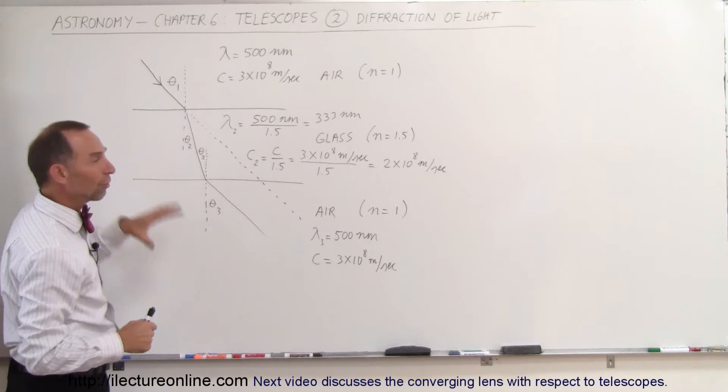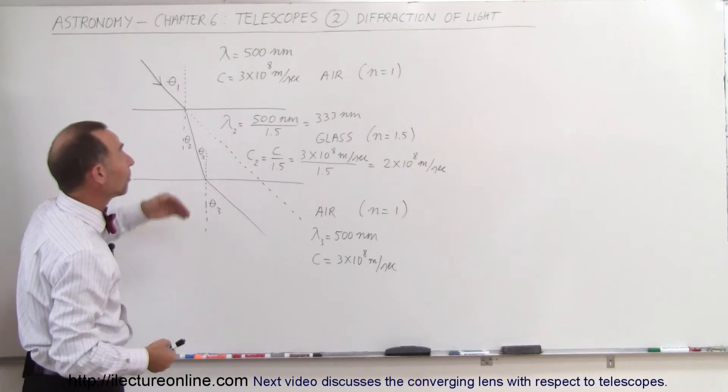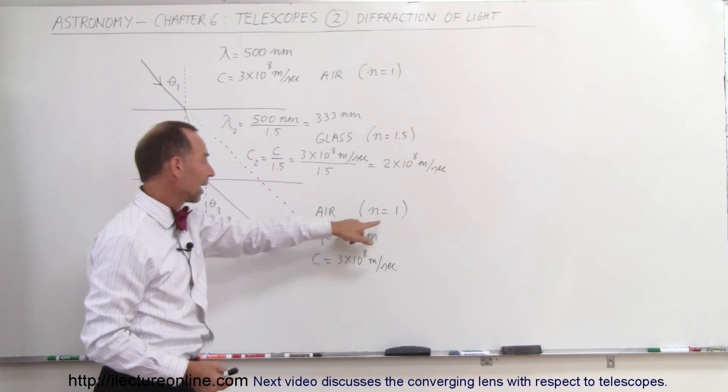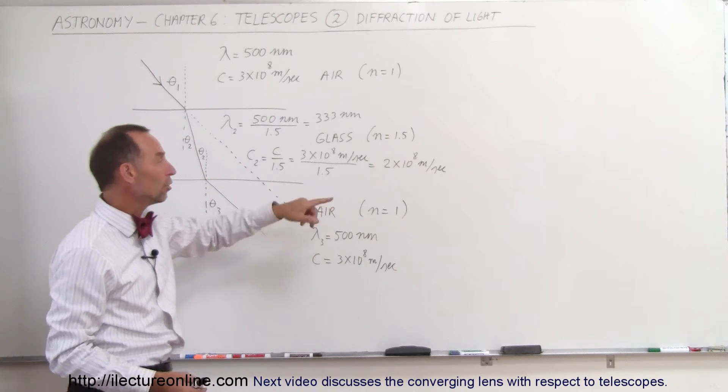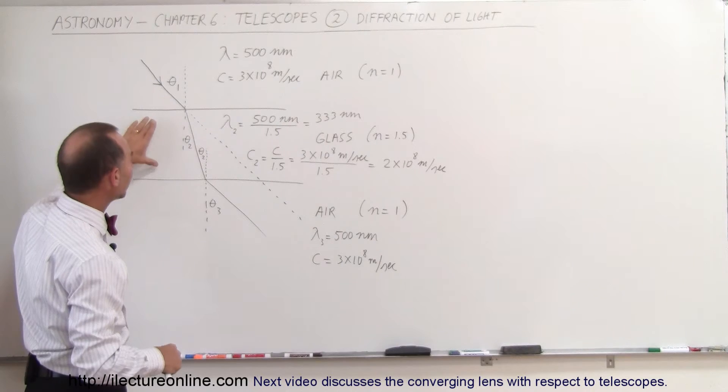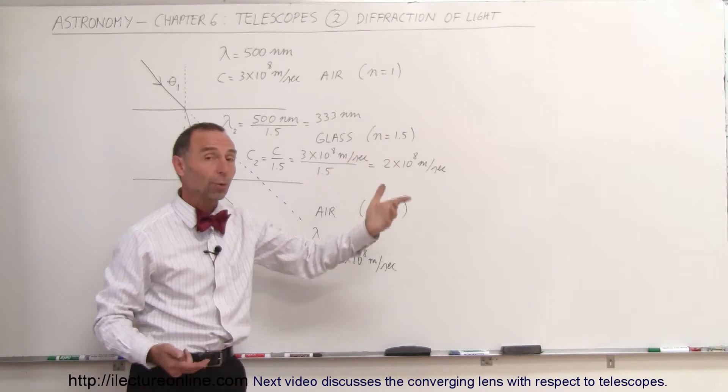Well, the index of refraction, every material has what we call an index of refraction. Space or air has an index of refraction we call 1. Here again on the other side, n equals 1. We use a small letter n for indication of index of refraction. But the index of refraction of glass is greater, like for example about 1.5.